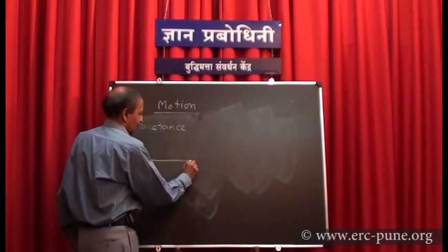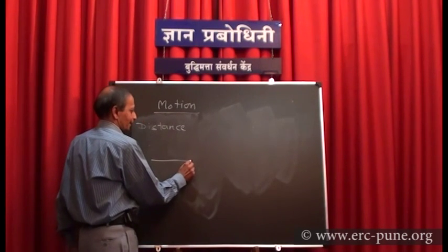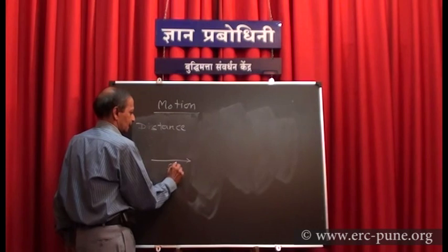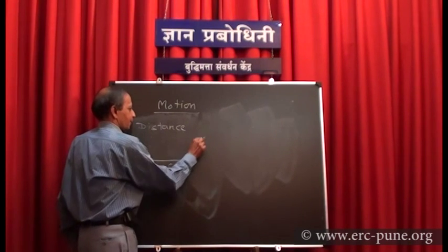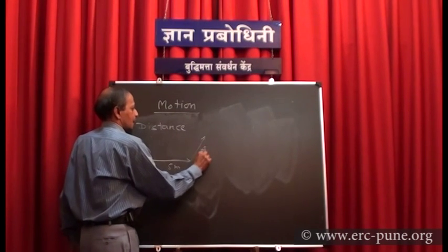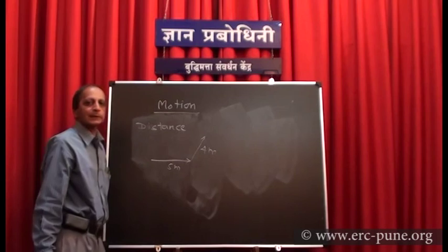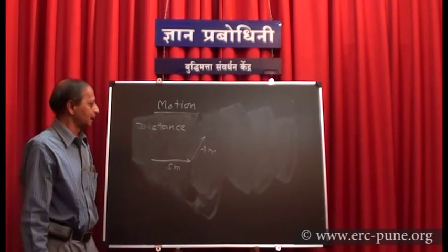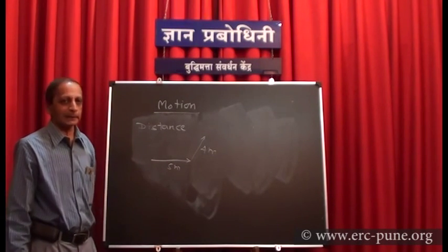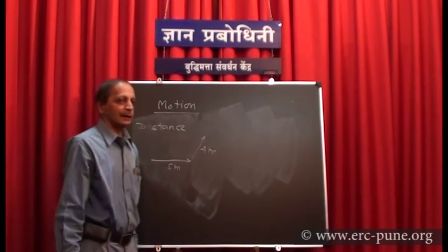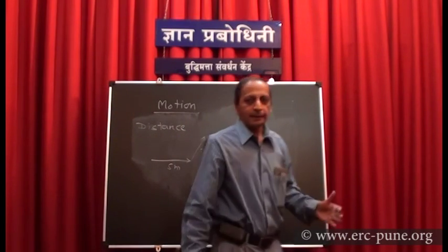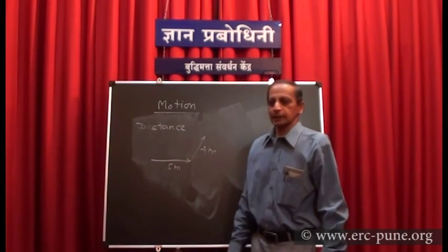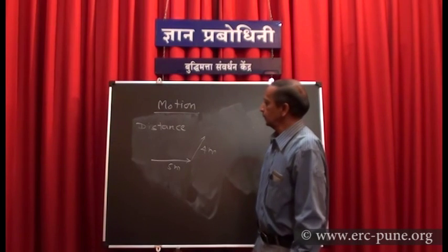Suppose you travel 5 meters in one direction and then 4 meters in another direction — the total distance traveled is equal to 9 meters. So the actual length of the path taken by the body while moving from one point to another is called distance.